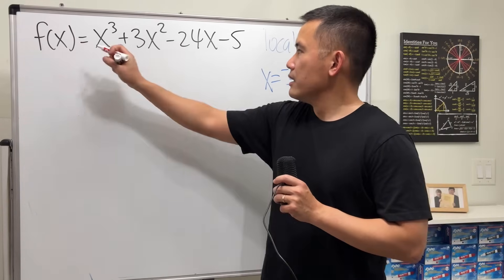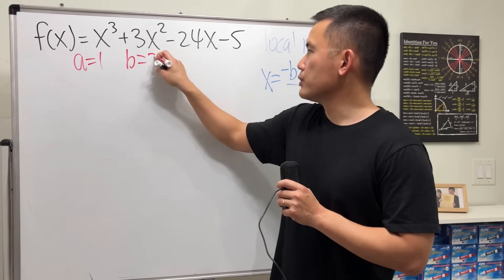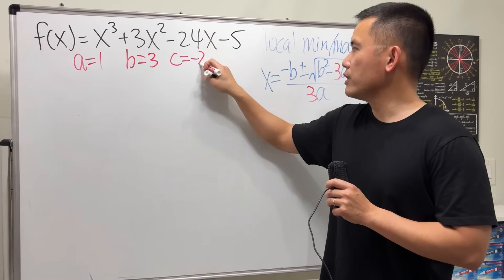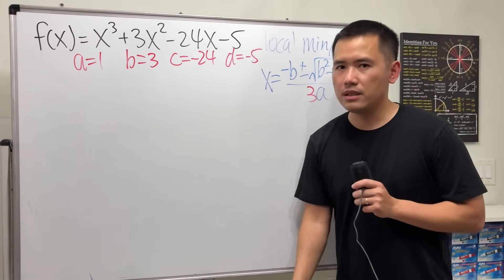And have a look, this equation in the standard form: a is equal to 1, b is equal to 3, c is equal to negative 24. d doesn't matter but I still would like to write it down, otherwise it's going to feel left out.